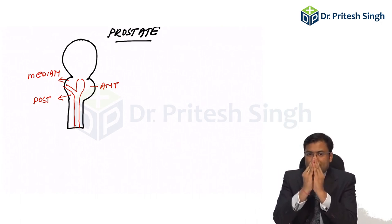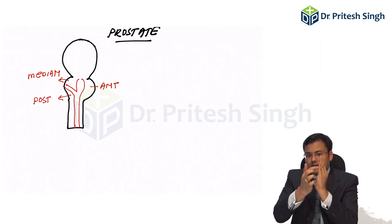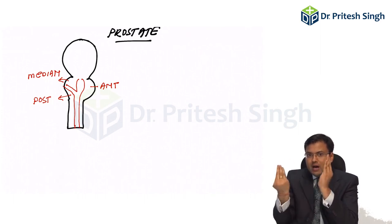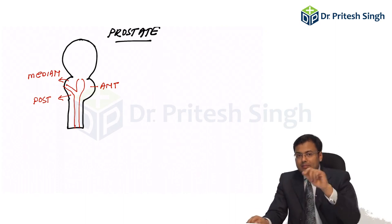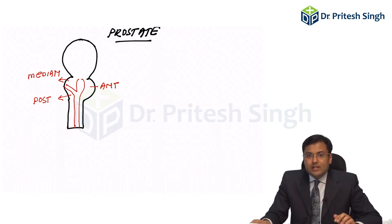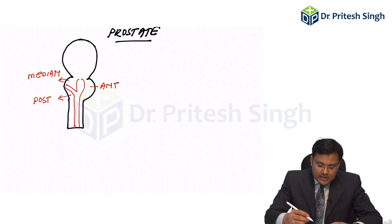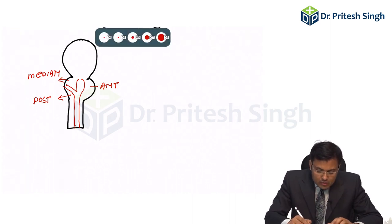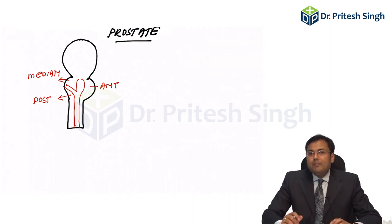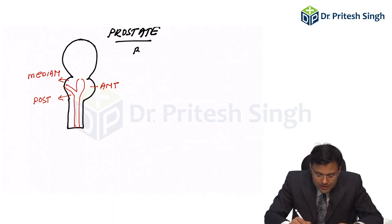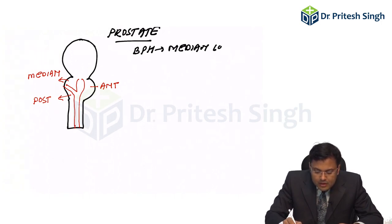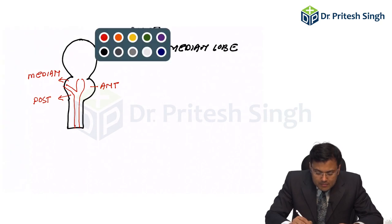So, suppose this is the prostate. If I take this kind of sagittal section: this is the anterior lobe, this is the posterior lobe, these two are the lateral lobes, and the area above the ejaculatory duct opening is known as the median lobe. Questions are asked: according to this older classification, BPH is most common in which lobe? BPH is most common in the median lobe.